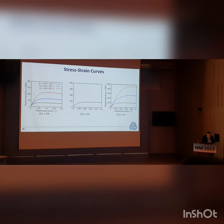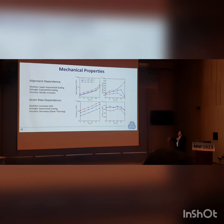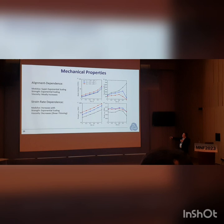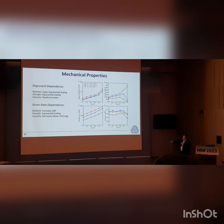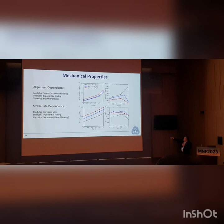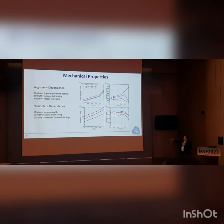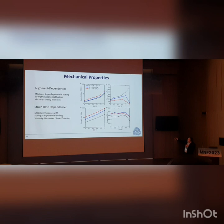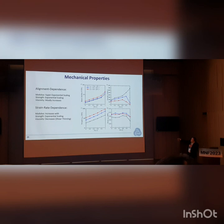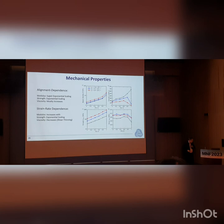Summarizing all results: plotting elastic modulus, strength, strain to failure, and viscosity all versus orientation parameter t2 for three different strain rates, in all cases modulus and strength increase with t2 — exponentially, possibly super-exponentially for the modulus at high degrees of order (on a log scale, a line is exponential; if it curves up, it's super-exponential). However, strain to failure and viscosity drop off at higher orientation, meaning the material becomes less tough. The ordering of strain-rate dependence for toughness is flipped: higher strain rates give less toughness and lower failure strain.